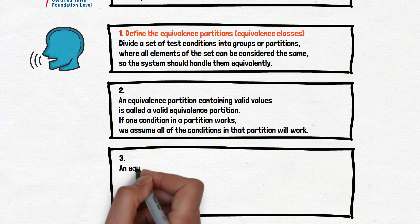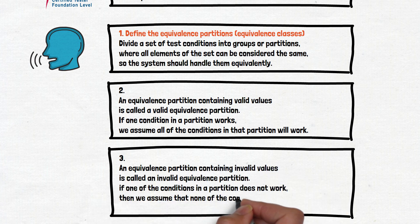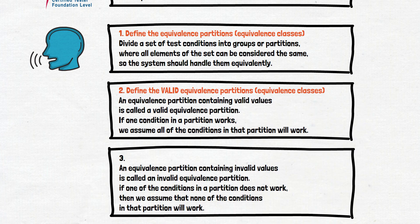And step number three. An equivalence partitioning containing invalid values is called an invalid equivalence partition. If one of the conditions in a partition does not work, then we assume that none of the conditions in that partition will work. It was a long monologue. You can stop the video and read all of this one more time.